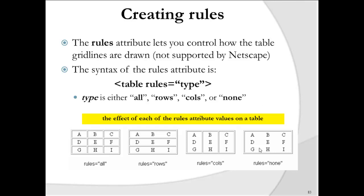The rules attribute controls how table grid lines are drawn. The syntax is table rules='type', where type can be 'all' (grid lines on all rows and columns), 'rows' (only rows), 'cols' (only columns), or 'none' (no grid lines except the border). Note: this attribute is not supported by older browsers like Netscape.